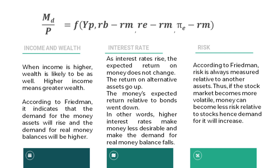The second determinant is interest rate. As interest rates rise, the expected return on money does not change; however, the return on alternative assets such as bonds and equity goes up. Thus, although the expected absolute return on money did not change, money's expected return relative to bonds went down. In other words, higher interest rates make money less desirable and cause the demand for real money balances to fall. In the formula, Rb and Re — the expected return on bonds and the expected return on stocks or equity — if these two components go up, they bring a negative impact on real money balances, Md divided by P.